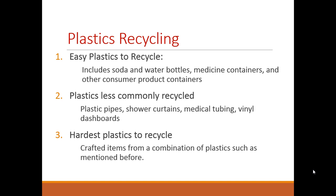For plastics, there are three categories that can be recycled. The first are easy plastics — these tend to be thinner plastics such as soda bottles, water bottles, medicine containers, and other types of containers. Then we have plastics that are not so thin and are less commonly recycled — things like plastic pipes, shower curtains, medical tubing, and vinyl dashboards. These plastics are tougher and harder.